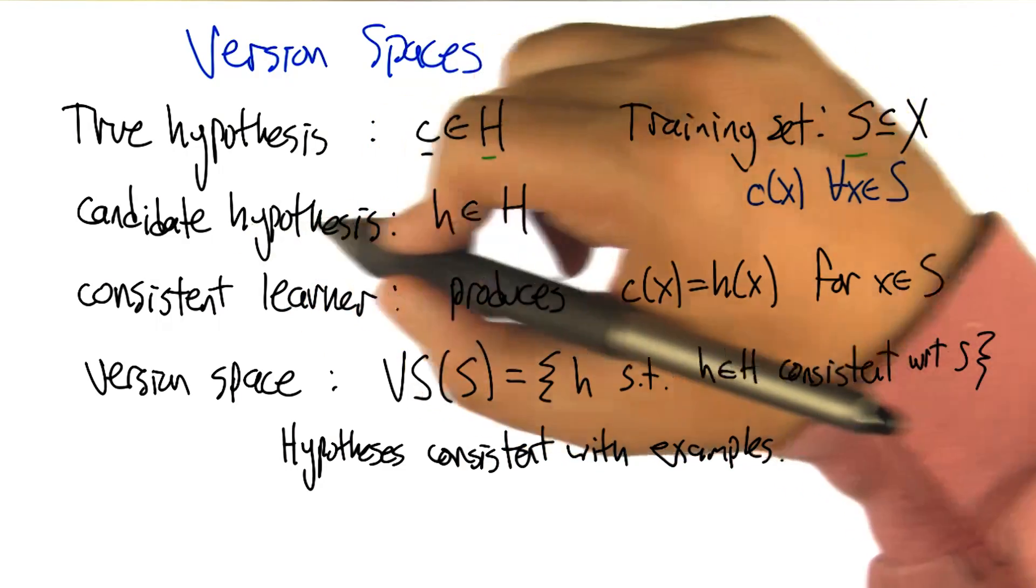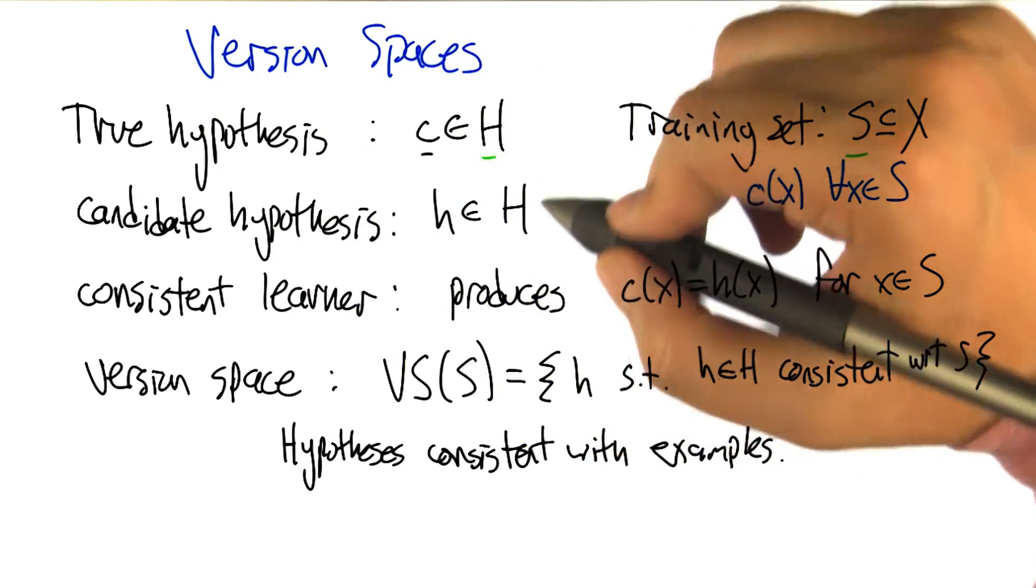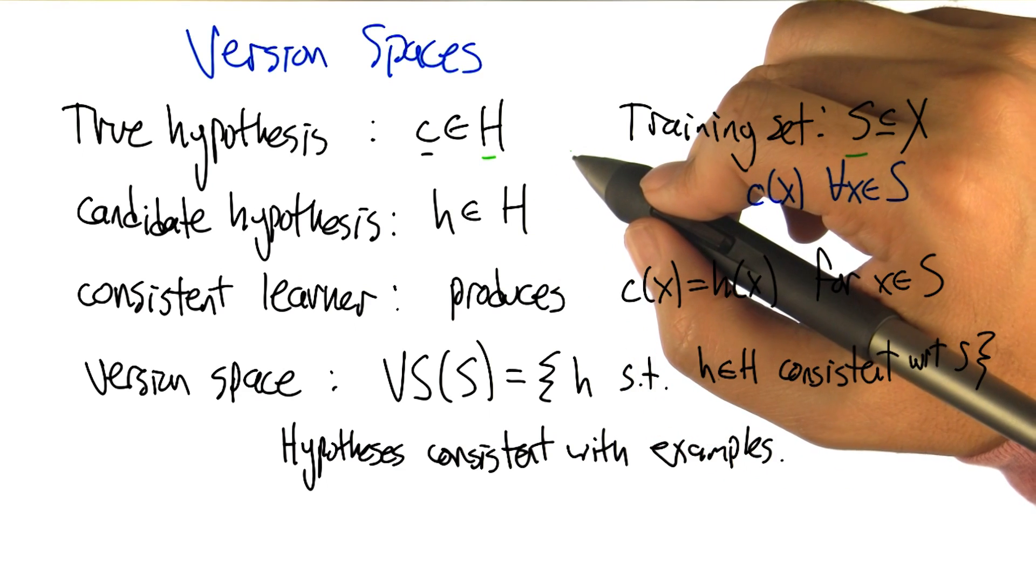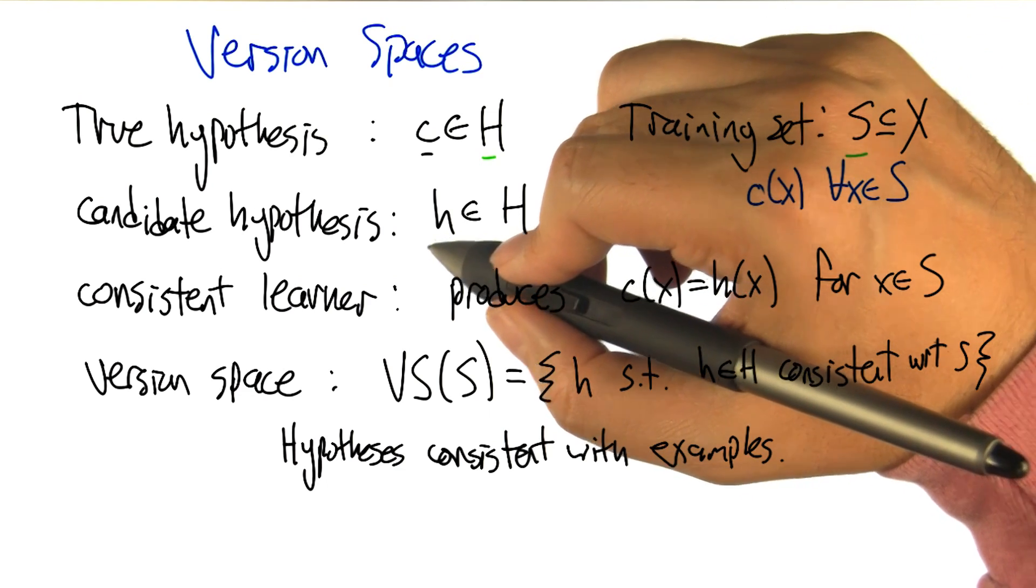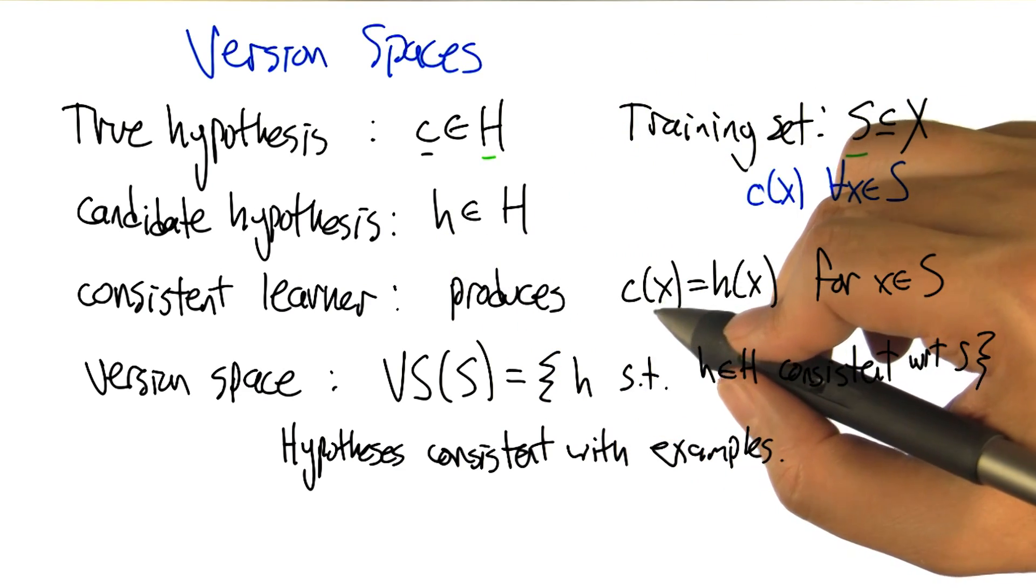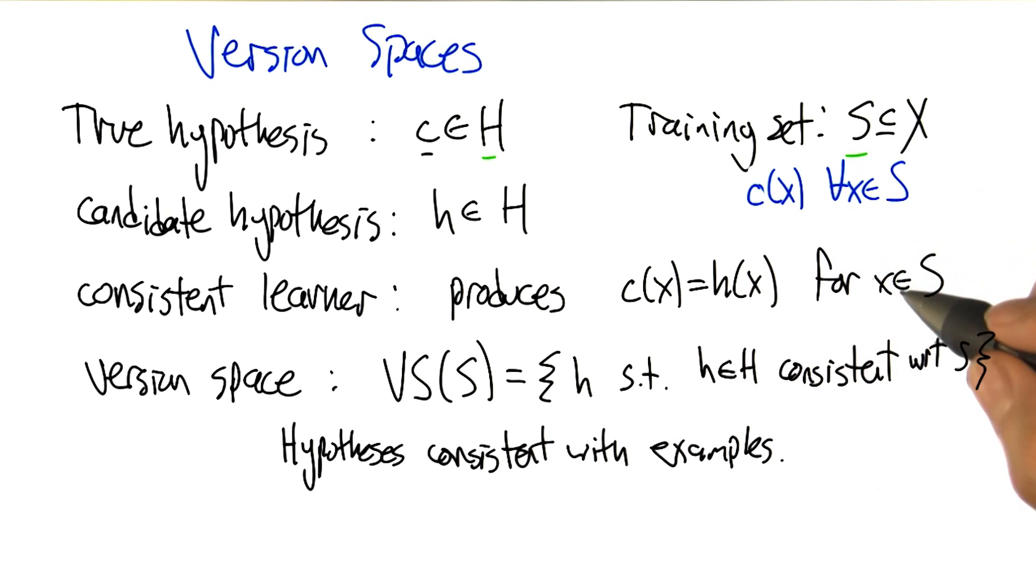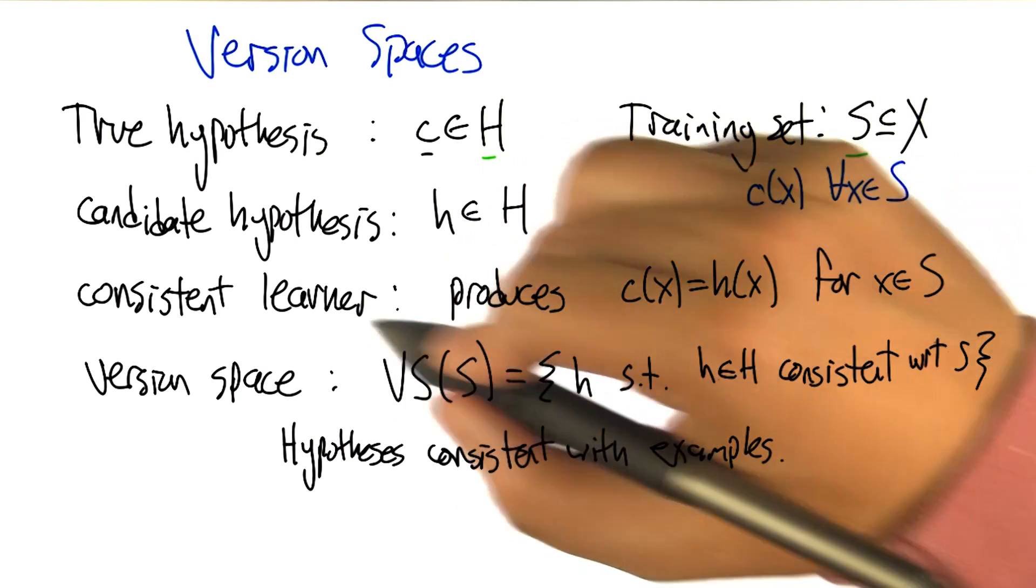So at any given time, a learner might have some candidate hypothesis, little h in big H, and a learner that produces a candidate hypothesis, little h, such that C of X is equal to H of X for all X in the training set, is called a consistent learner.